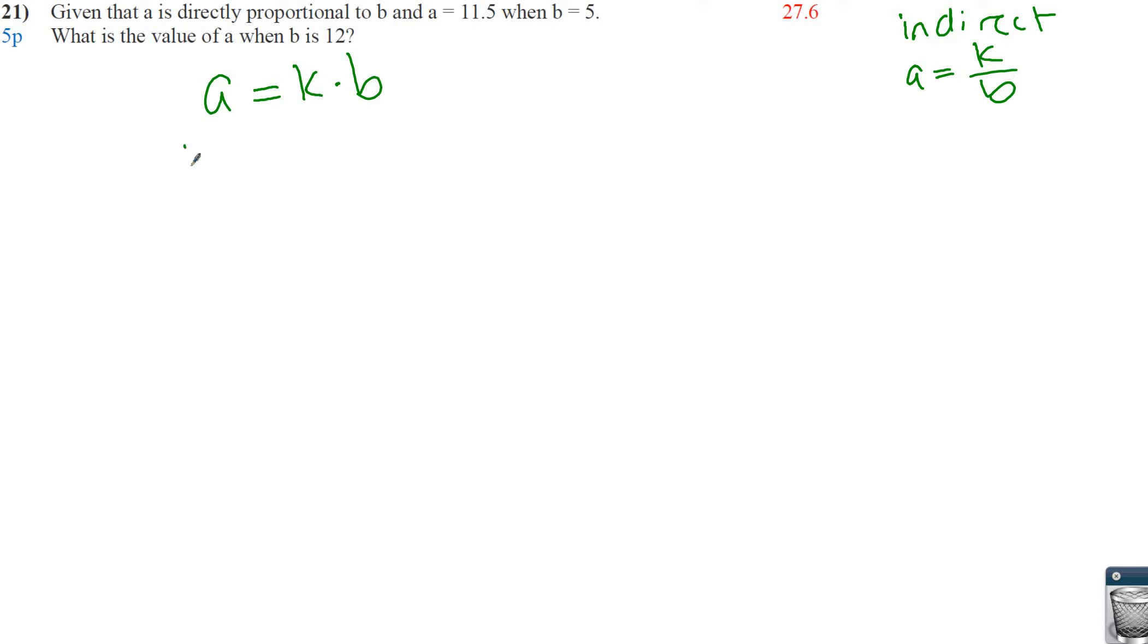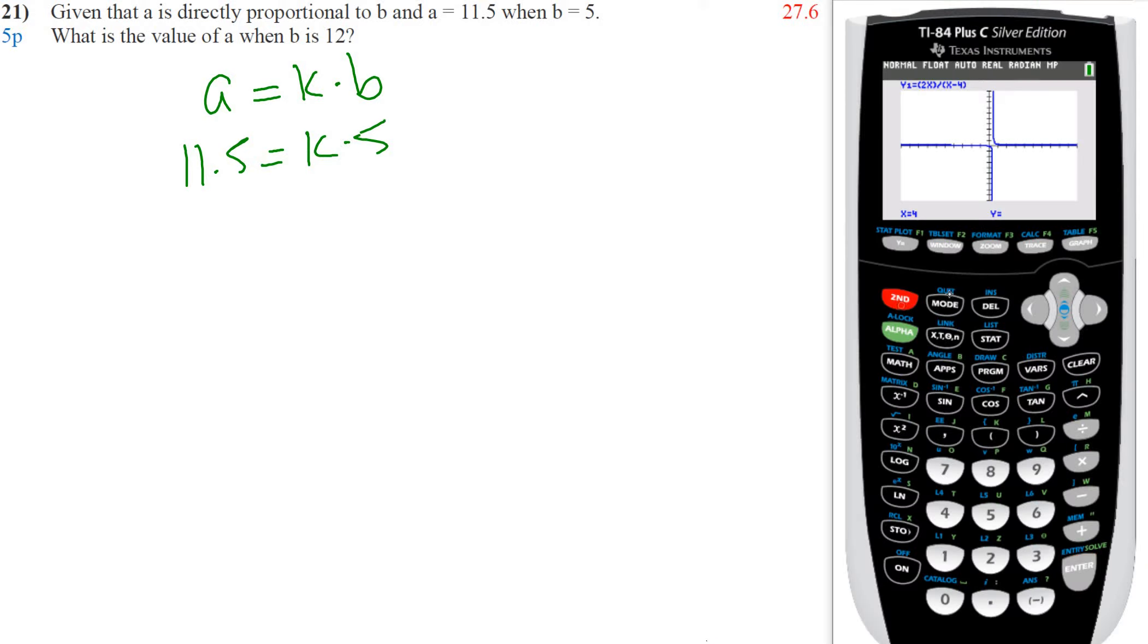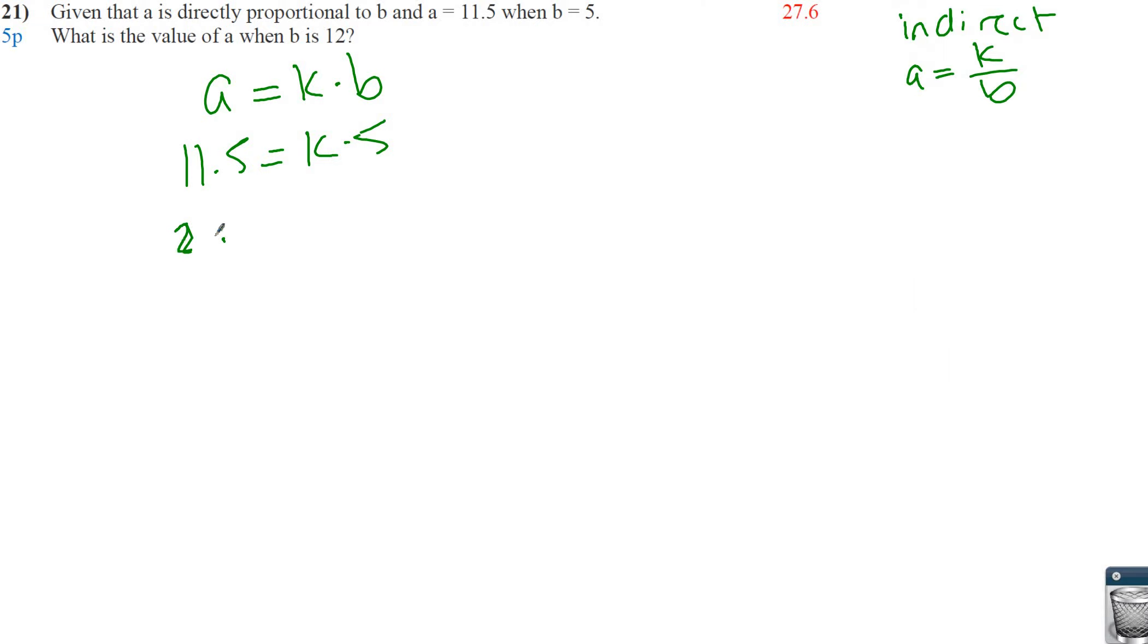So here, if a is 11.5 when b is 5, well, then we just do 11.5 divided by 5. I could have done that. I don't know why. So we get 2.3 equals k. So then now, we find what is a when b is 12. So what's a? k is 2.3. What's a when b is 12? And that's how we get our answer.